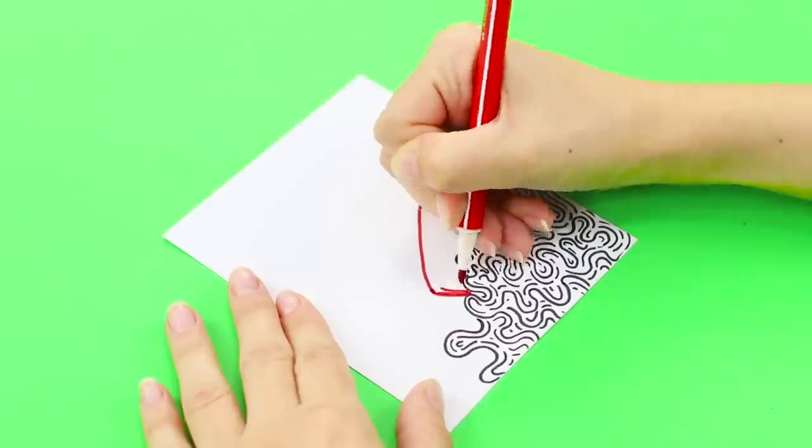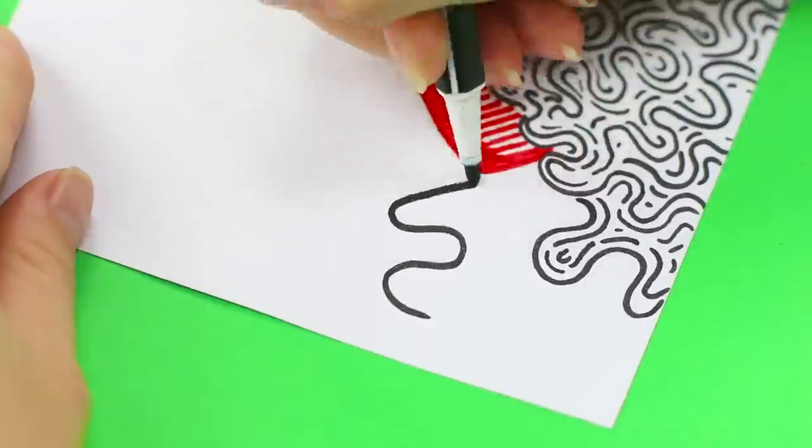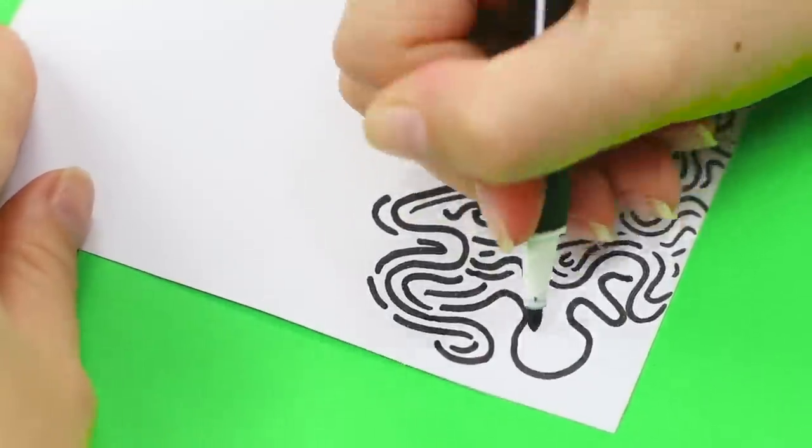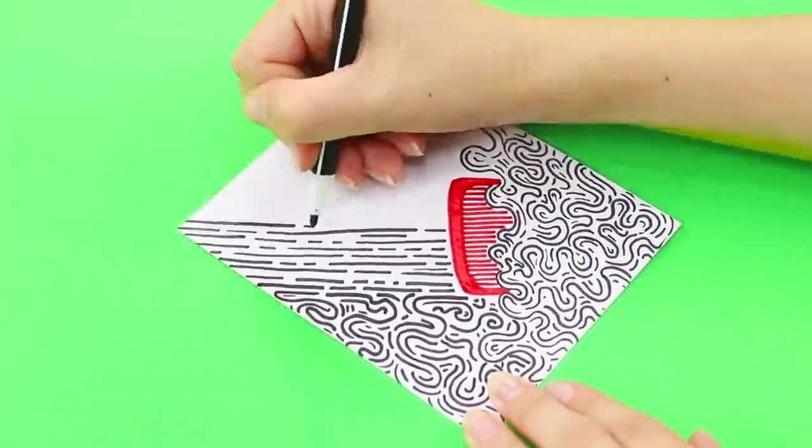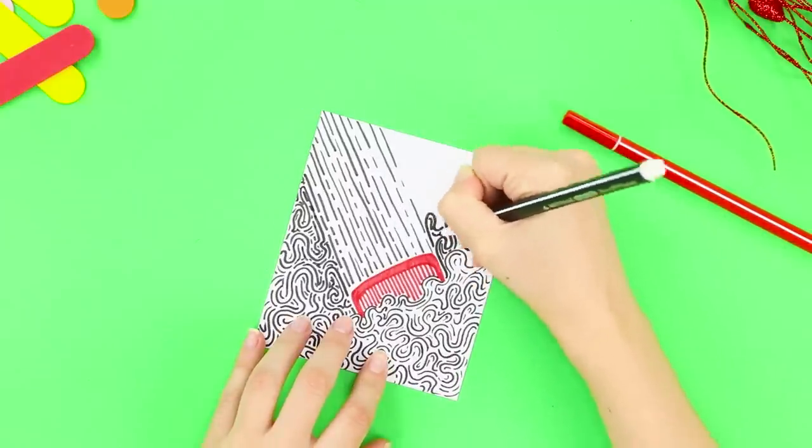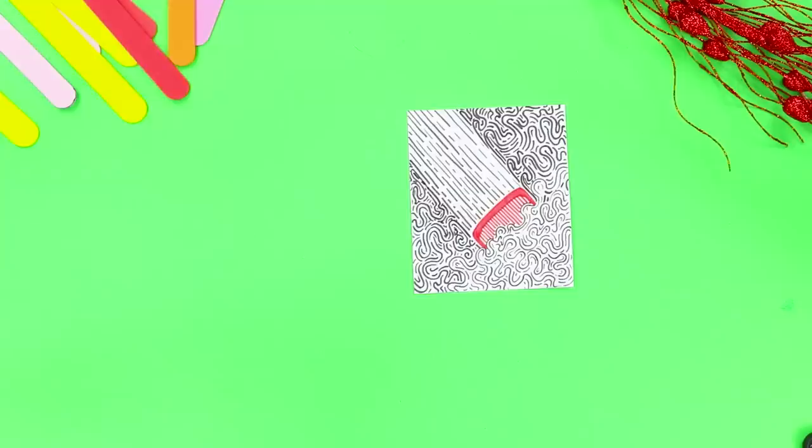Now draw a comb with a red marker. Like this with sharp teeth. And draw the same curls as below on the sides of the comb. And draw lines above it. It looks like the comb burst into the atmosphere! Red alert! We have an unidentified combing object on our radar.